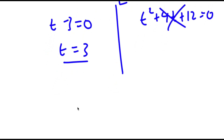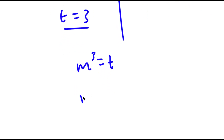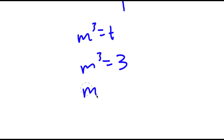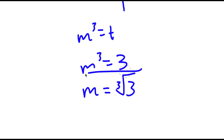Remember we set m to the power of 3 equal to t. So if m³ = 3, this means m is equal to the cube root of 3.